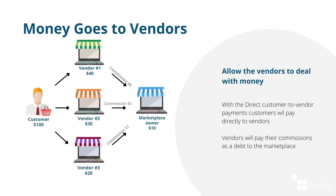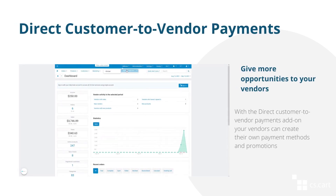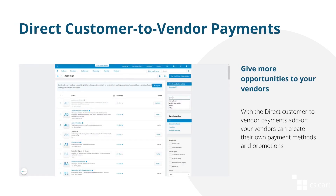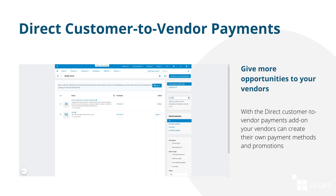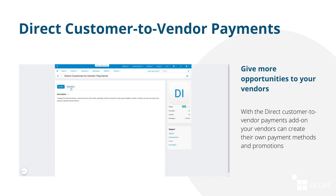The last model is so-called direct customer-to-vendor payments. In this case, if a customer wants to buy three products from three different vendors, they have to make three payments. The customer uses the payment methods offered by those vendors. This functionality is provided by the direct customer-to-vendor payments add-on. Another big advantage of this model is that vendors are able to create and use their own promotions.